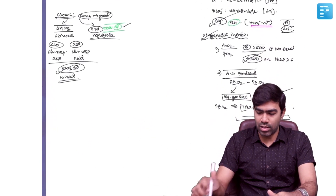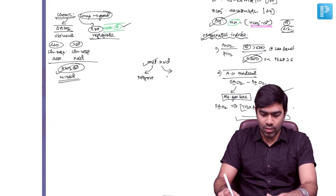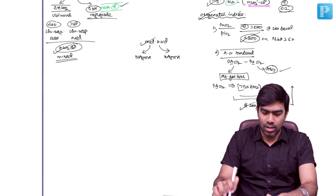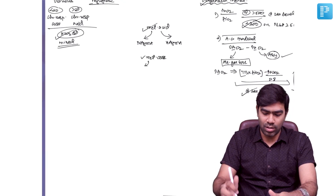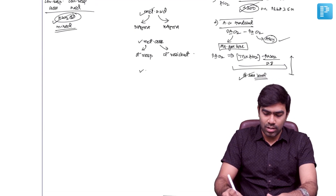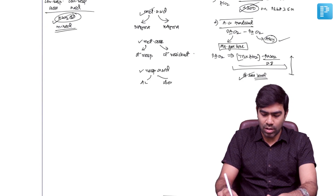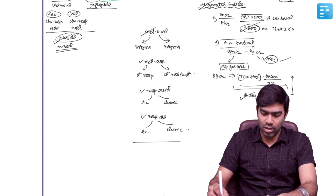In summary, what we have learned: first, metabolic acidosis — there are two forms: normal anion gap metabolic acidosis and high anion gap metabolic acidosis. Second, metabolic alkalosis — two types: chloride-responsive metabolic alkalosis and chloride-resistant metabolic alkalosis. Third, respiratory acidosis — which could be acute or chronic respiratory acidosis. Fourth, respiratory alkalosis — which could be acute or chronic respiratory alkalosis. This is what we have covered.